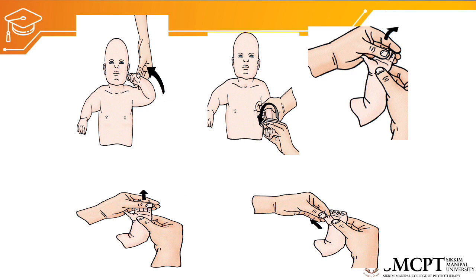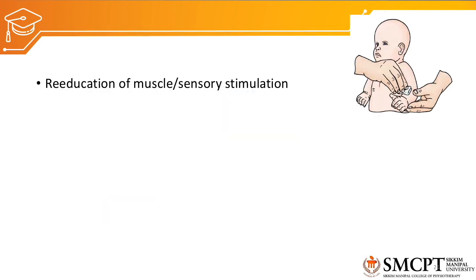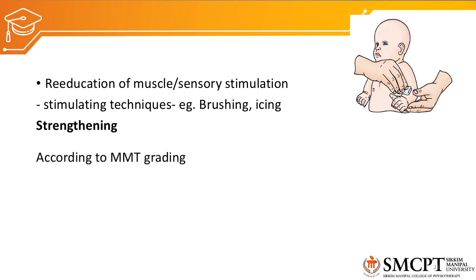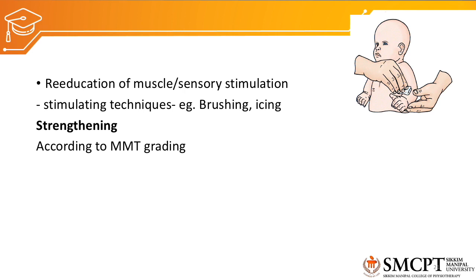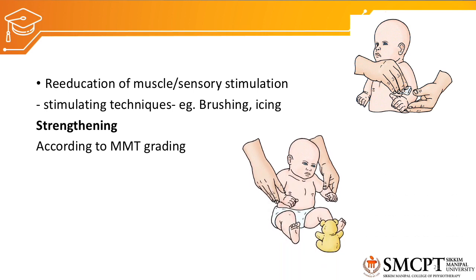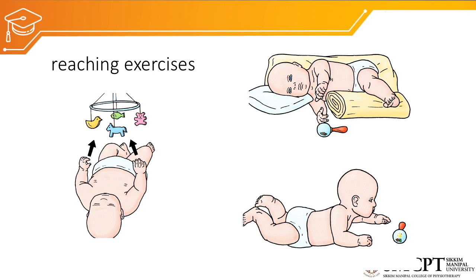Passive range of motion exercises for the child should be performed with care. Muscle re-education and sensory stimulation can be done using stimulating techniques such as brushing and icing. For adults, strengthening is done according to MMT grading: grade 0–1 uses muscle stimulation, grade 2 uses suspension, grade 2+ uses active range of motion, and grade 3+ introduces resistance. For pediatric patients, resistance exercises are not appropriate; instead, reaching exercises are encouraged by attracting the child to move toward interesting objects.